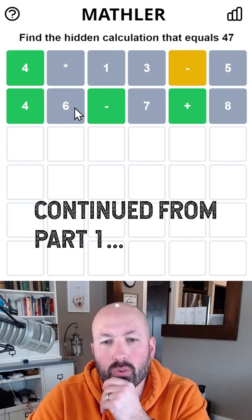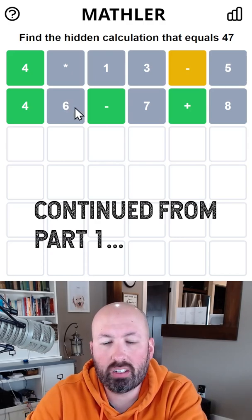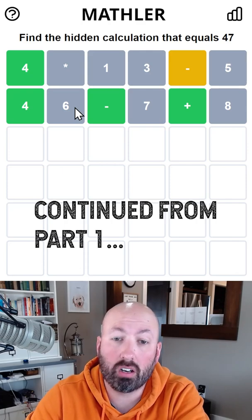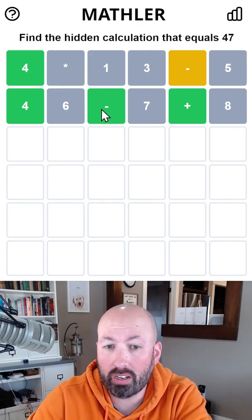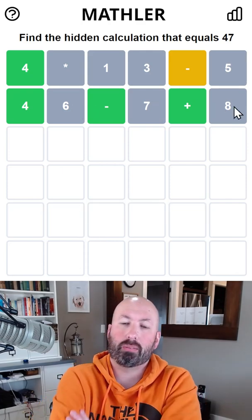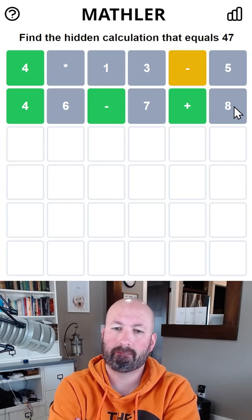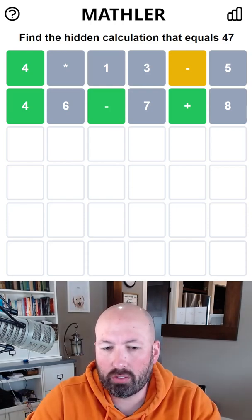42 or 44... yeah, the only digits we have are two, four, and nine or zero. I mean, we could do 49 minus two plus zero, but that seems trivial. I don't like that. I'm gonna assume it's not something trivial like that.